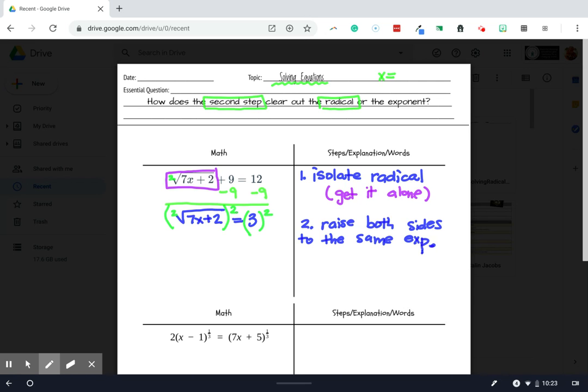Because that 2 in the exponent will cancel the 2 in the index spot, they'll wipe each other out. And we'll be left with 7x plus 2 equals 9.